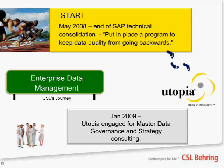Just before go-live of the ECC 6 system, our steering committee said we need to put in place a program to keep data quality from going backwards. Although we didn't take the time as part of the upgrade consolidation project to deal with master data, they recognized we need to make sure we don't go backwards. So the charge was given to put a data governance program in place. As CSL looked at our in-house knowledge, we recognized we didn't have a good base of experience in this area, so we engaged Utopia for guidance on master data governance strategy. I'll turn it over to John Ferrioli.